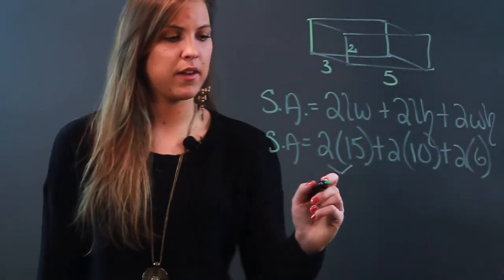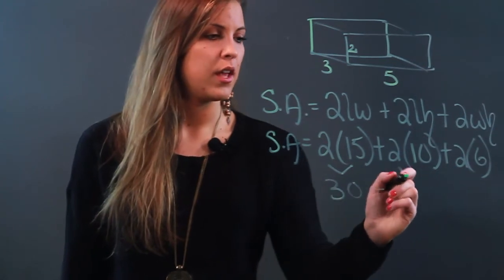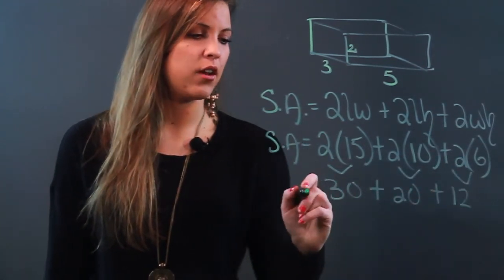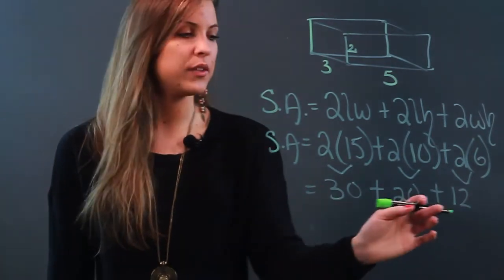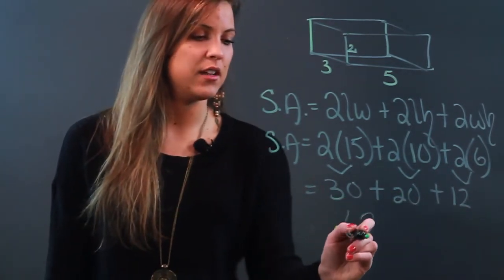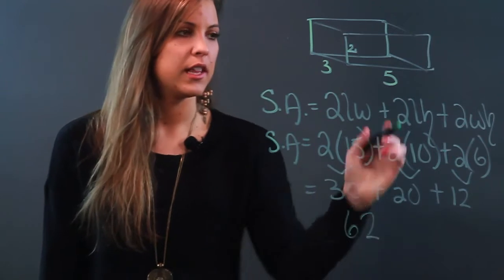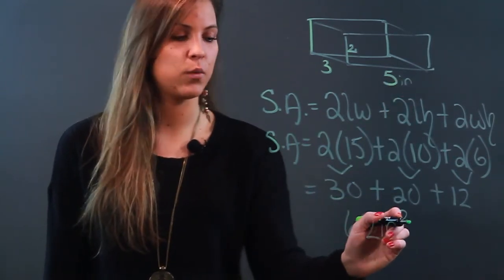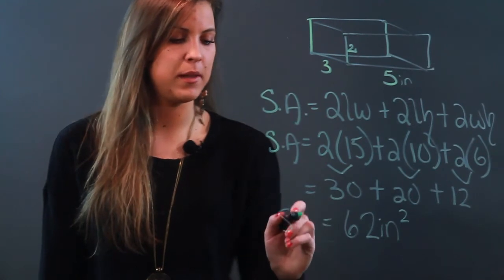Now we go ahead and simplify these numbers, so I have 30 plus 20 plus 12. I add all these up: 30 plus 20 is 50, plus 12 is 62. So whatever my units were, let's say these were inches, we're doing surface area so it is actually square units. My surface area would be 62 square inches.